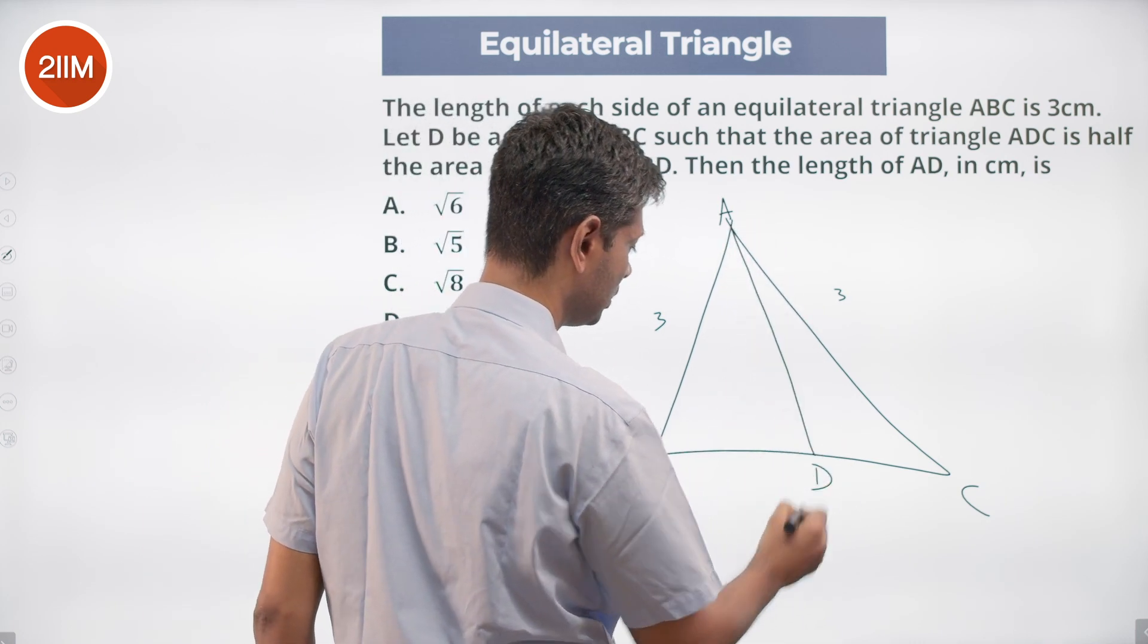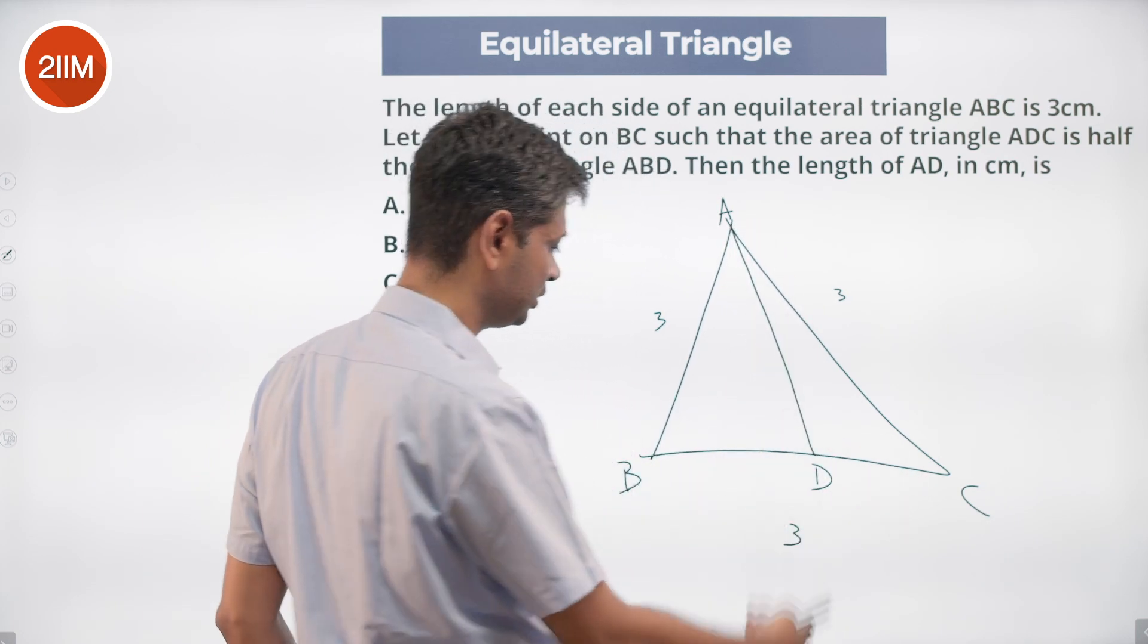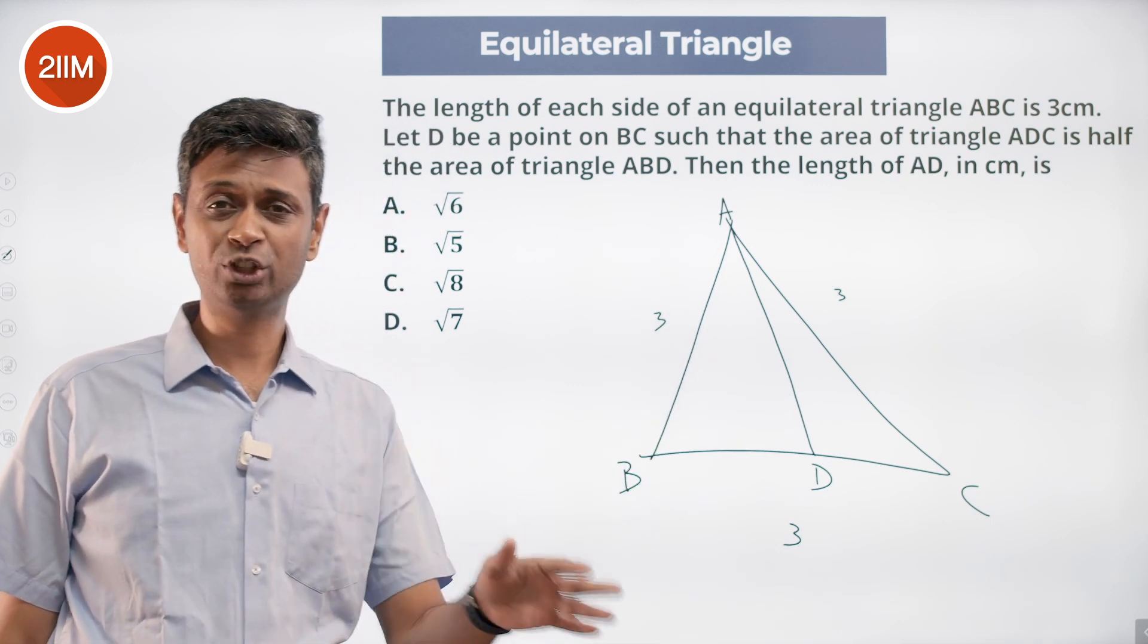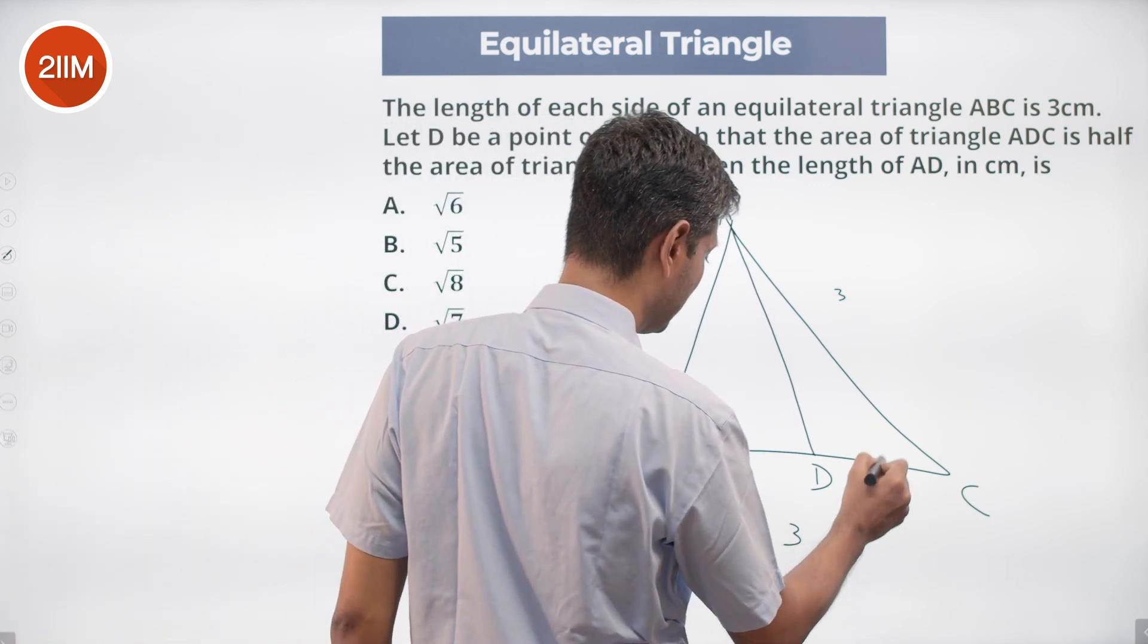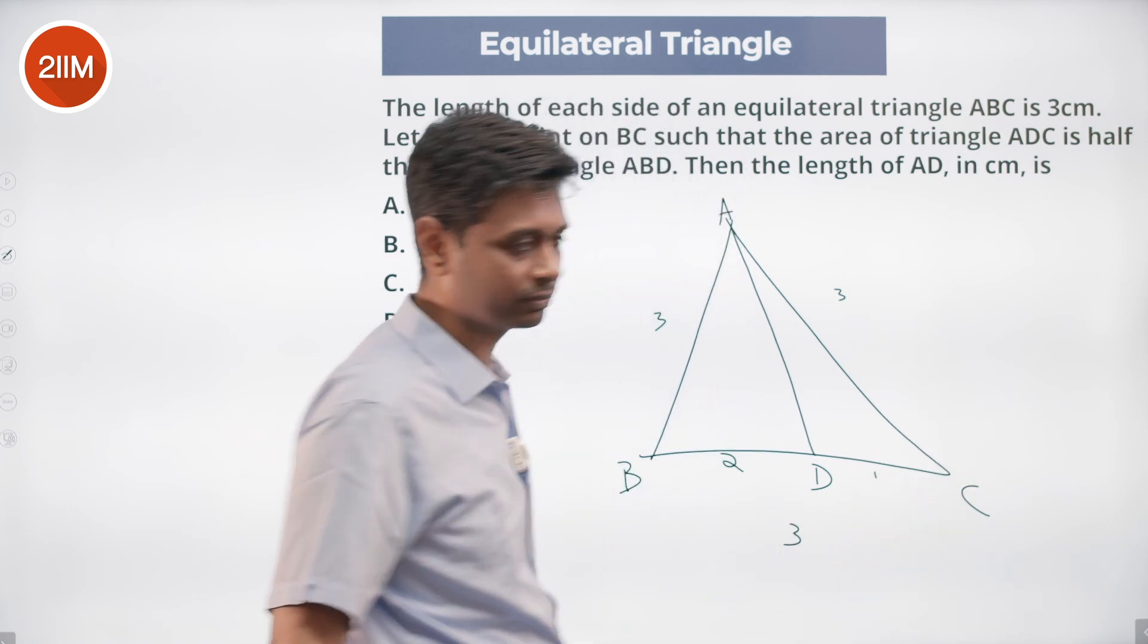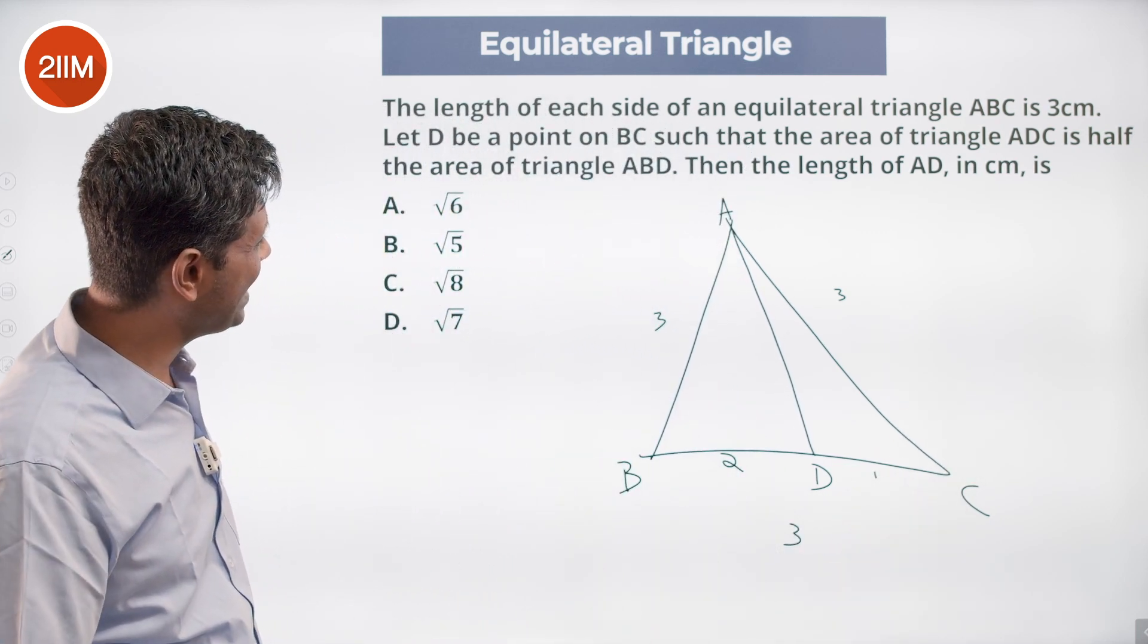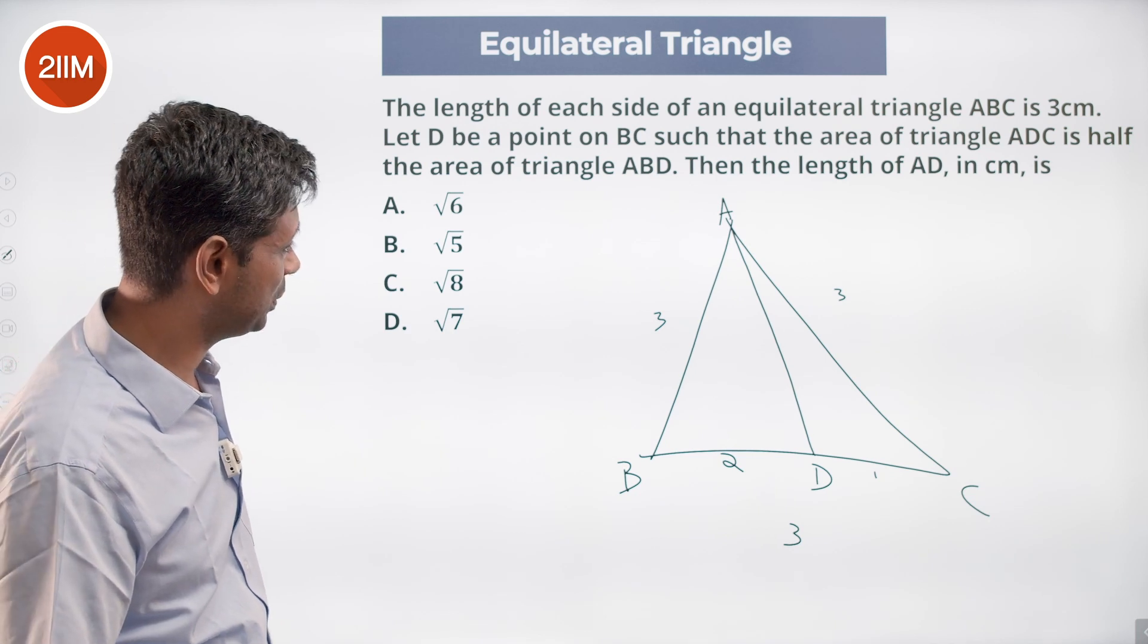This area is half of this. The height is the same, so the bases should be in the ratio 1 to 2. So BD is 2 and DC is 1. The length of AD in centimeters is what we want to find.